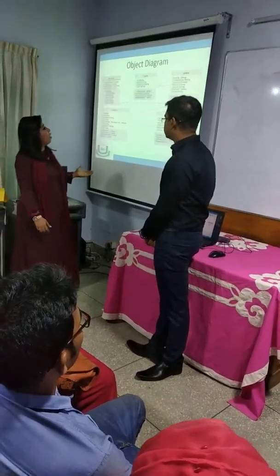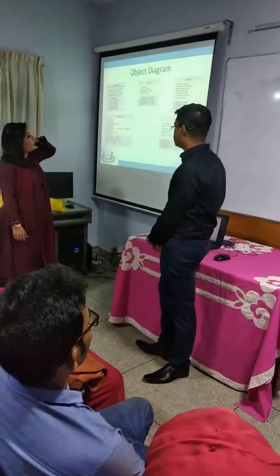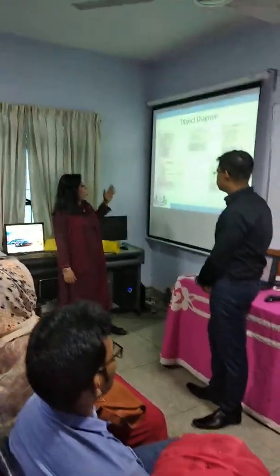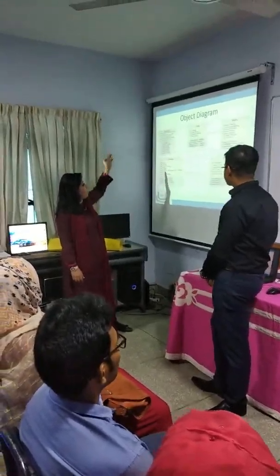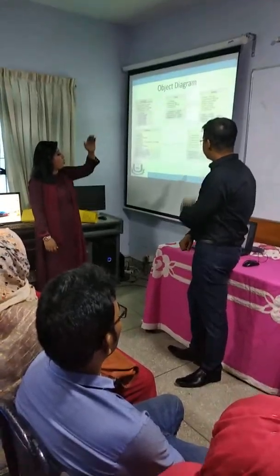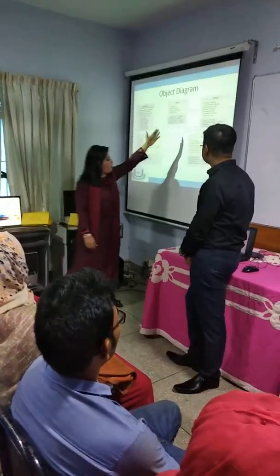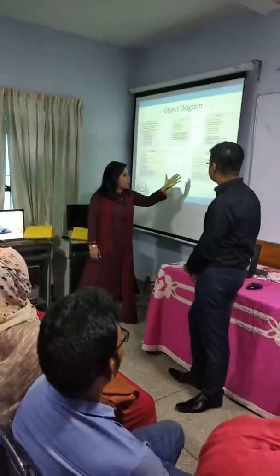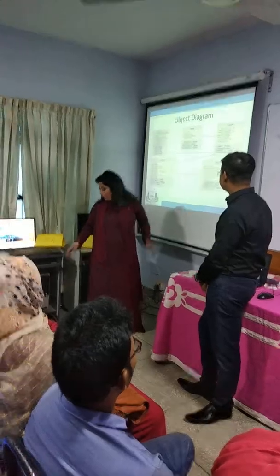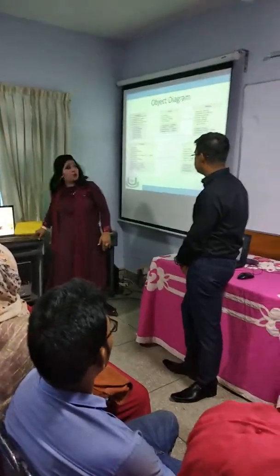This is the object diagram. In the object diagram, Booking is an object, Car is an object, and User is an object. Their attributes are also shown according to their values.